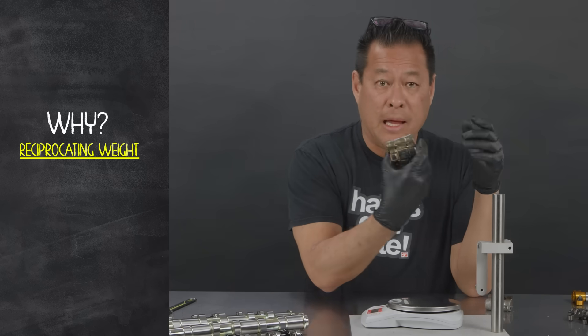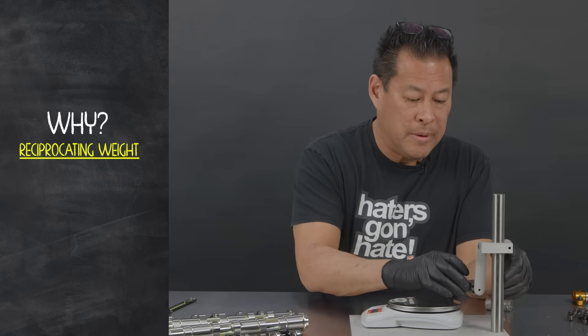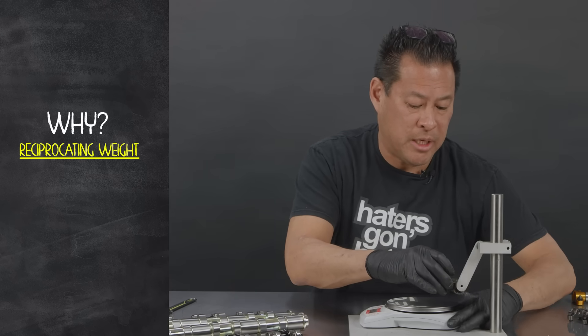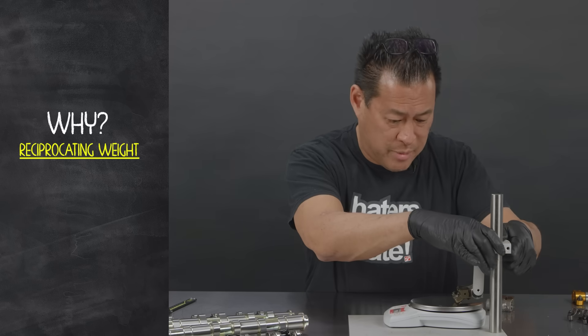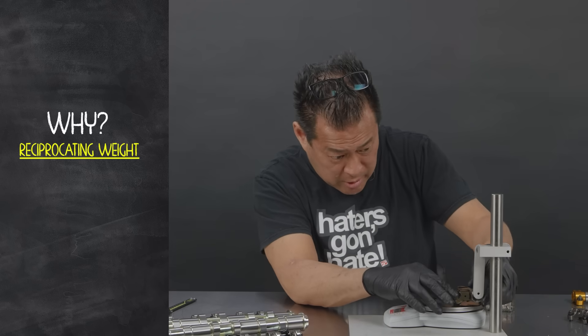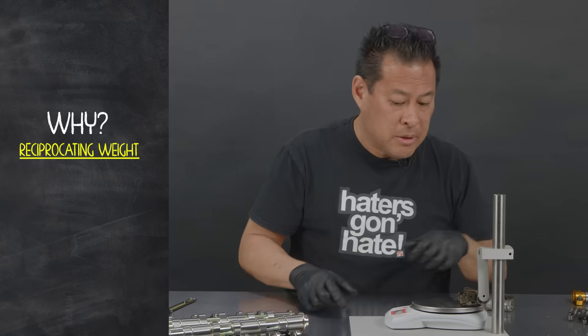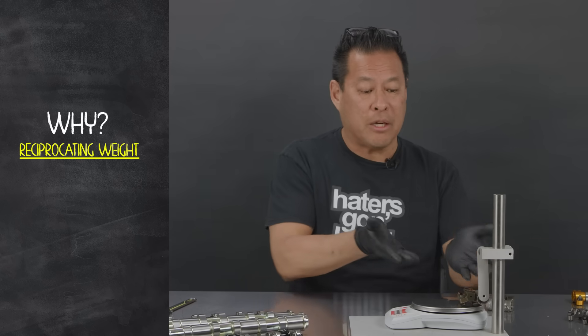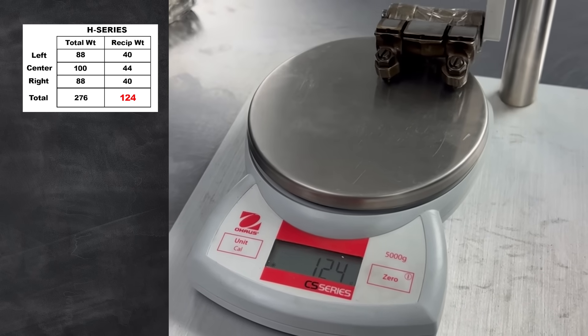Here we have a locked out set of H rockers. I'll put them on the scale to check reciprocating mass. Don't complain that the setup's not perfect, it's given us enough information to show you what I'm talking about. Here you can see with the Prelude rockers the reciprocating weight is 124 grams.